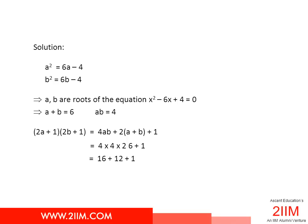Once we know that a and b are roots of this equation, we know a + b = 6, which is -b/a, and ab = 4, which is c/a. Just using the sum of the roots and product of the roots formula, we can get a + b and ab.